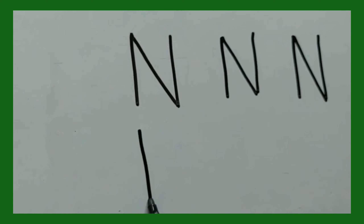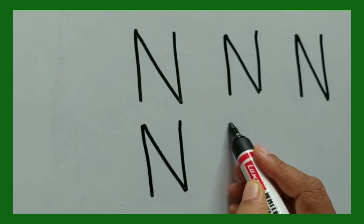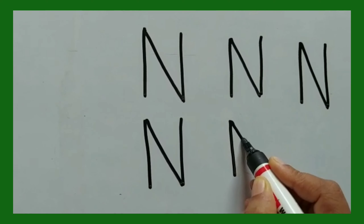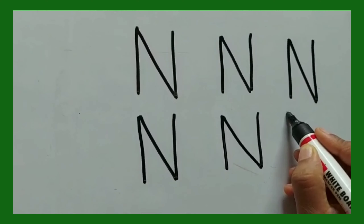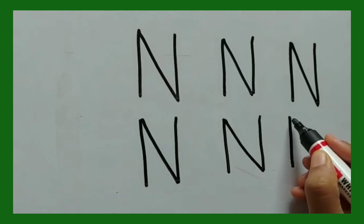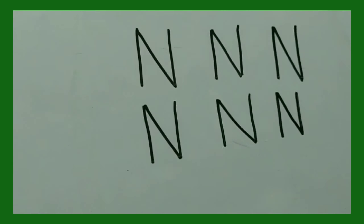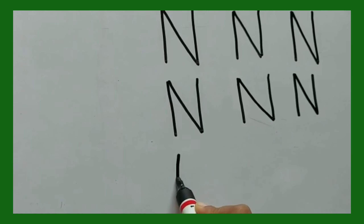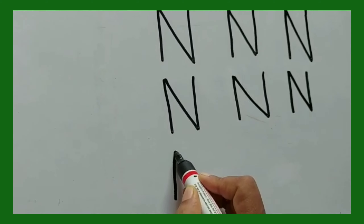Standing line, left slanting line, and a standing line — Letter N. So make a standing line, left slanting line, and a standing line — Letter N. So children, hold your pen, hold your crayon, make a standing line, left slanting line, and a standing line. N.